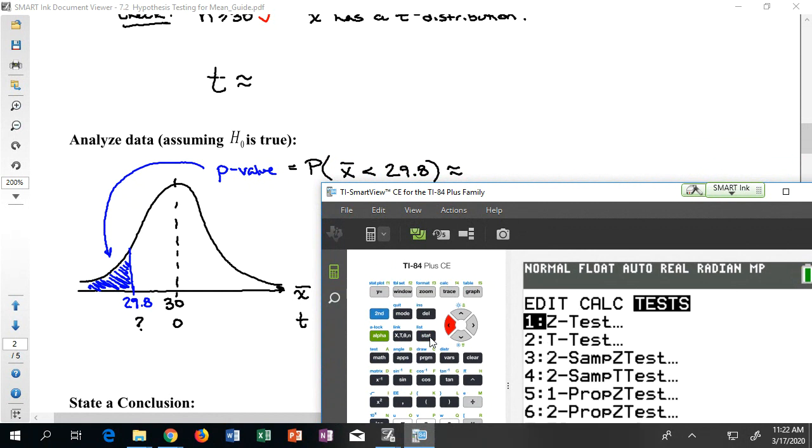So let's go ahead and see how it works. I would click on the stat button. I would go over to tests. And according to the formula sheet, I should be looking for a specific test. Take a look at your formula sheet right now to see if you can identify what test we're supposed to be looking for in this calculator menu. Pause the video if you need to, to keep looking.